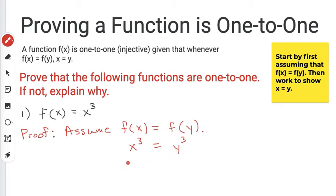So now I have x cubed equals y cubed. Well, remember what I need to get to in the end. I need to show that x equals y. So how can I get rid of this exponent? I could take the cube root of both sides, right? So I'm going to take the cube root of x cubed, bring down my equal sign, and take the cube root of y cubed.